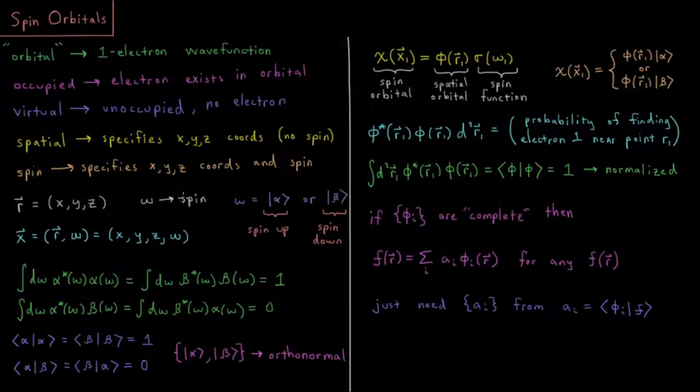And we would indicate the spin by the spin variable omega. This is generally not going to be an alphabetic w, this is generally going to be the Greek letter lowercase omega. So omega can take on two possible values. Omega can either equal alpha...